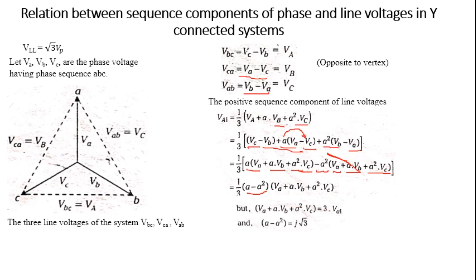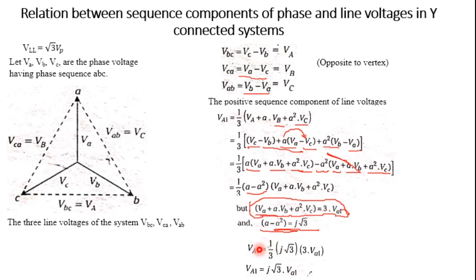The equation becomes (A minus A²) multiplied by (VA + A·VB + A²·VC). We know that VA + A·VB + A²·VC equals 3·VA1 when the system contains only positive sequence components. And A minus A² equals j√3. Substituting, we get VA1_line = (1/3) × j√3 × 3 × VA1_phase = j√3 × VA1.